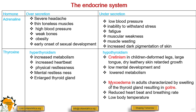In adults, hypothyroidism results in myxedema, characterized by swelling of the thyroid gland, resulting in what we call goiter. There is also reduced heartbeat and breathing rate, together with low body temperature.